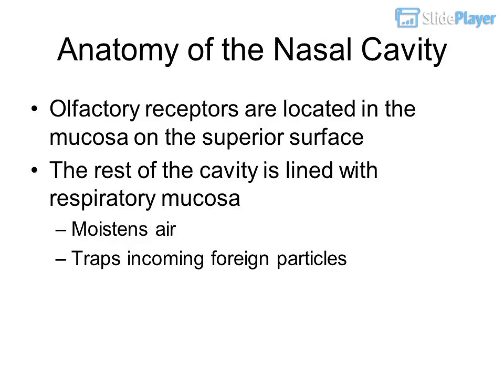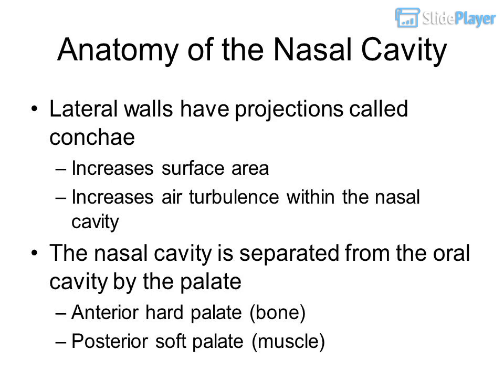Anatomy of the nasal cavity: olfactory receptors are located in the mucosa on the superior surface. The rest of the cavity is lined with respiratory mucosa, which moistens air and traps incoming foreign particles. Lateral walls have projections called conchae, which increase surface area and increase air turbulence within the nasal cavity. The nasal cavity is separated from the oral cavity by the palate — anterior hard palate (bone) and posterior soft palate (muscle).